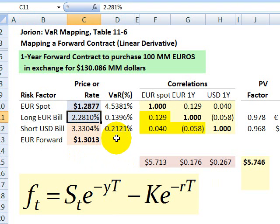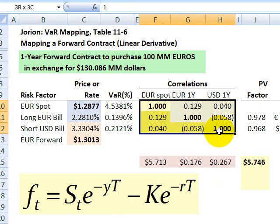Those are the three risk factors. We have assumptions here about their values. 2.28 percent is the assumption for the one-year euro interest rate. Then we have assumptions about the value at risk of the underlying risk factors. For example, 4.5 percent is the VaR of the spot currency exchange rate. With 95% confidence, we don't expect that spot rate to drop by more than 4.5 percent over the year.